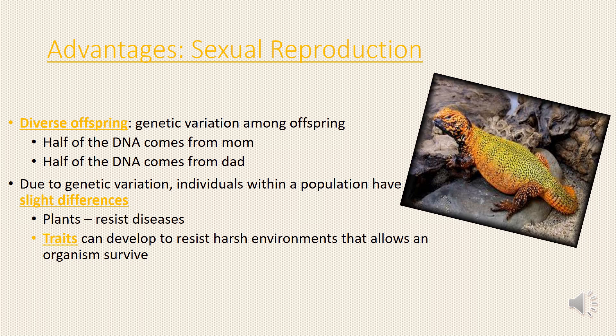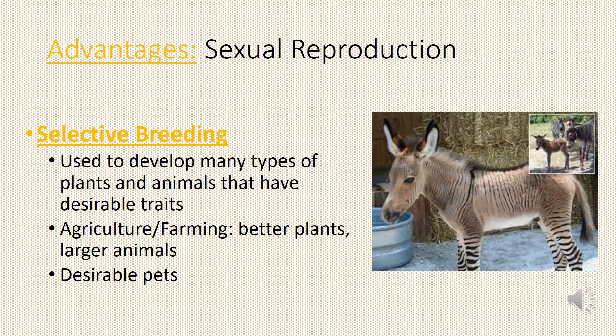Plants can resist diseases. Traits can develop to resist harsh environments, which allows an organism to survive. Another advantage of sexual reproduction is selective breeding. It is used to develop many types of plants and animals that have desirable traits.